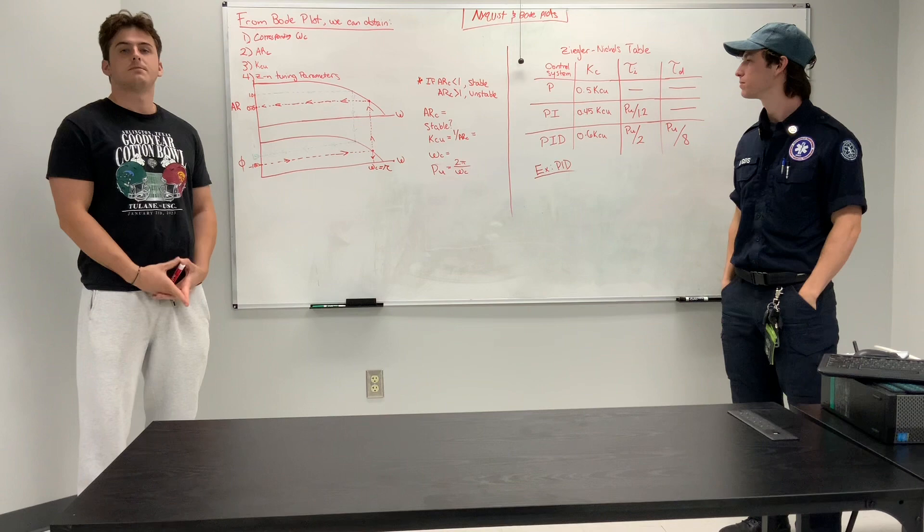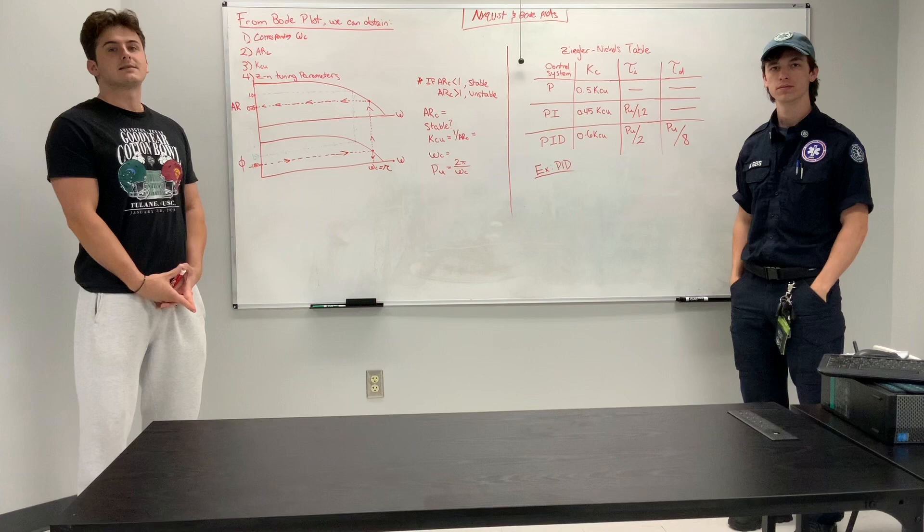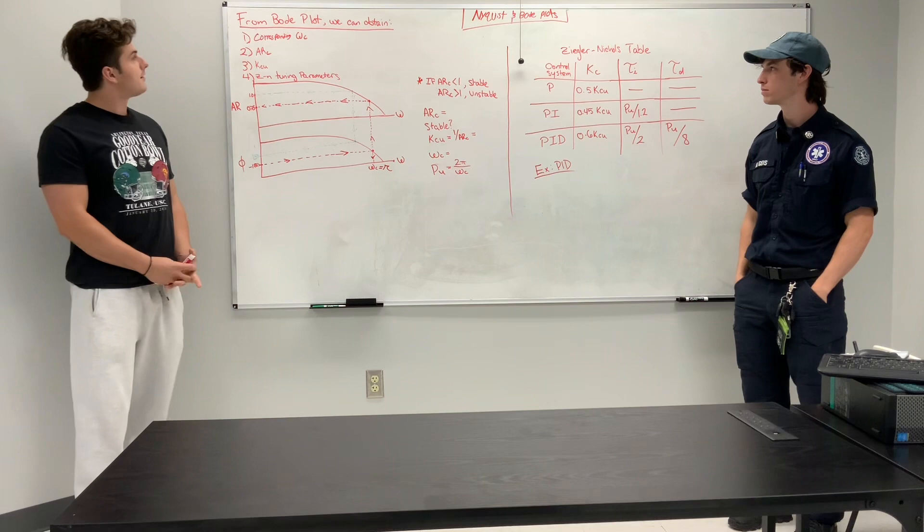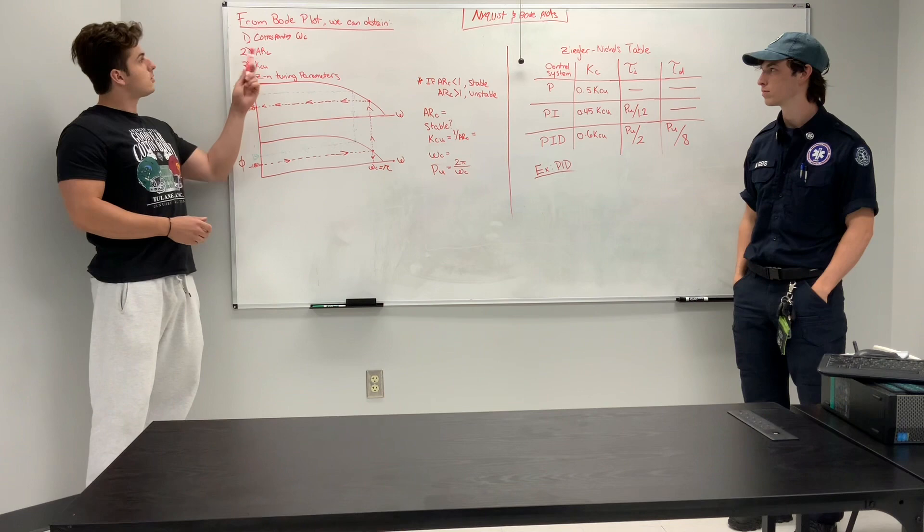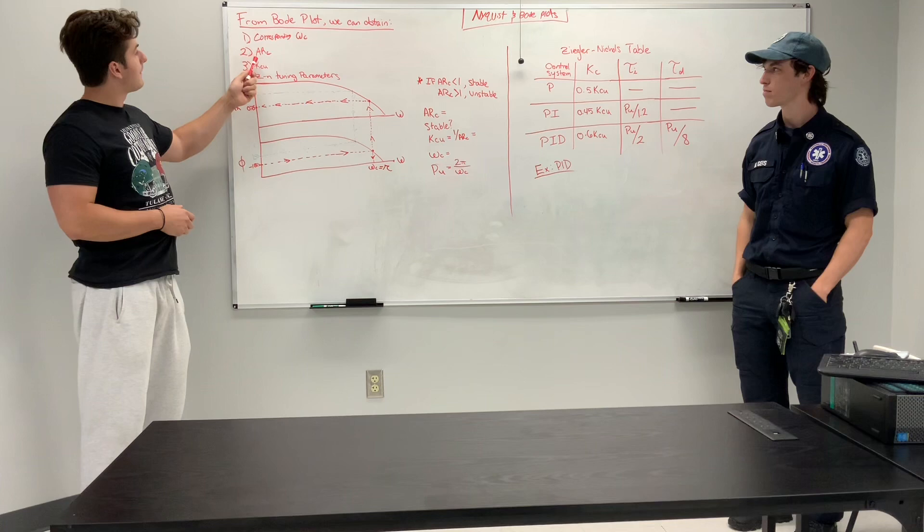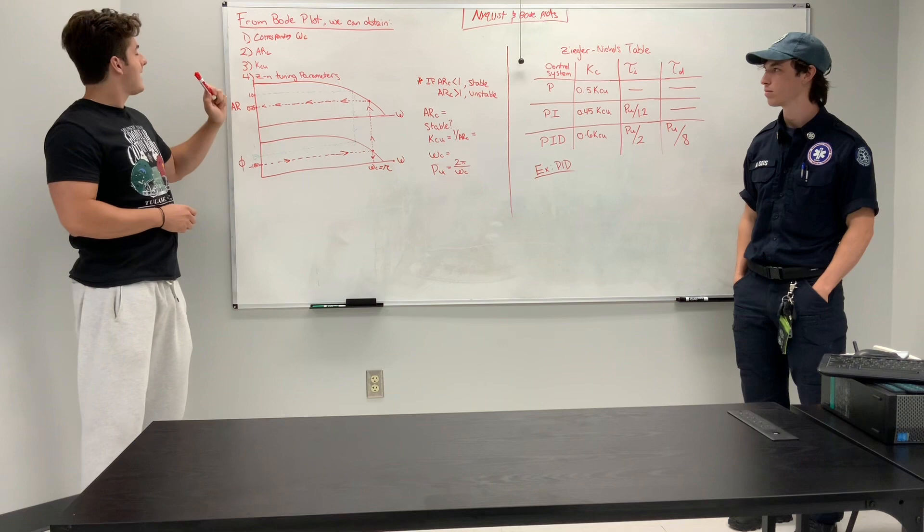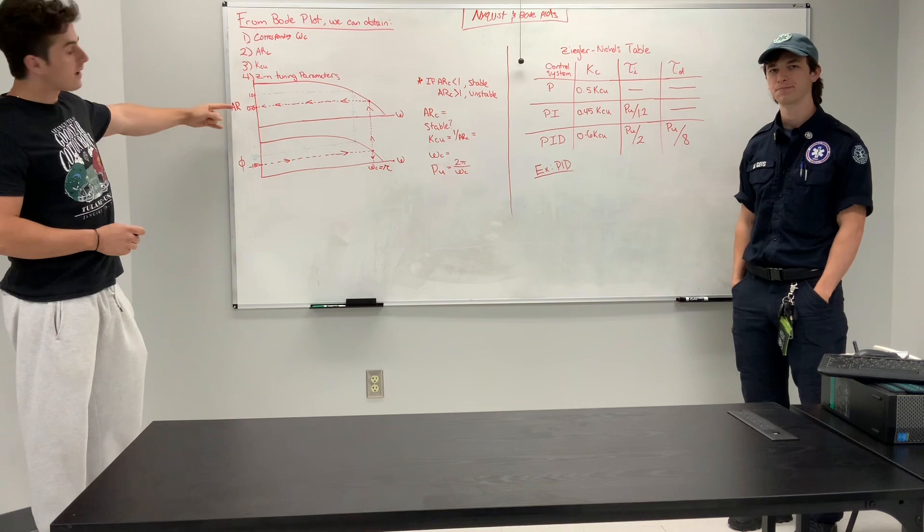Okay, so moving on from the Nyquist plots, we are now going to move on to the Bode plots. And the Bode plots display very similar information as the Nyquist plots do, except it is done in the Cartesian coordinate planes as opposed to the polar coordinate system. So from this Bode plot, visually speaking, we can obtain some important information listed here. The corresponding frequency, the crossover frequency, the amplitude ratio, the crossover amplitude ratio, the controller gain ultimate, and ZM tuning parameters.